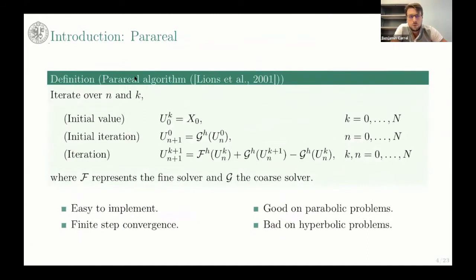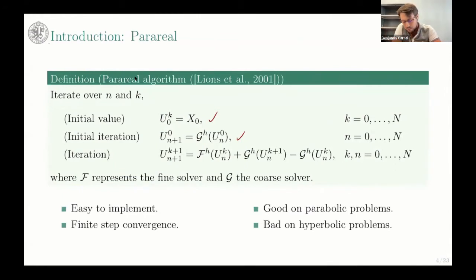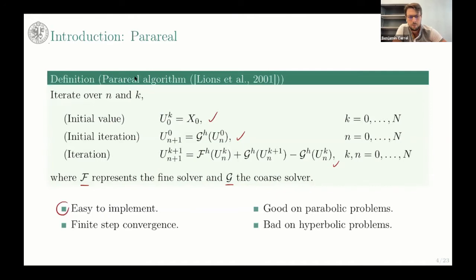First I give the definition of the Parareal algorithm. We need an initial value and an initial iteration. For the initial iteration, we use the coarse solver applied iteratively — this is the parallel iteration. F represents the fine solver and G the coarse solver. Some properties of Parareal: it's easy to implement once you have a fine and coarse solver, it has finite step convergence, it's good on parabolic problems, and sometimes bad on hyperbolic problems in general.